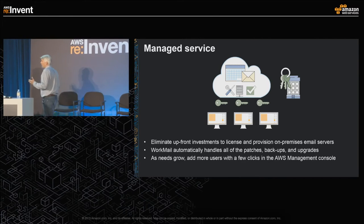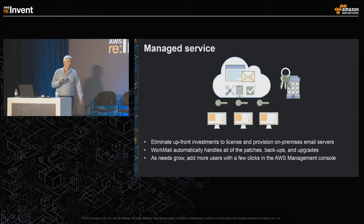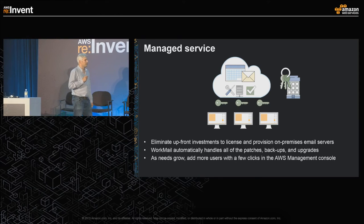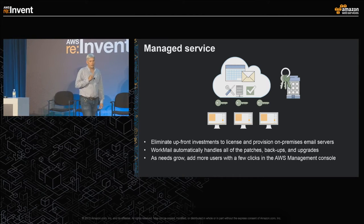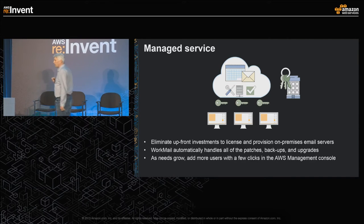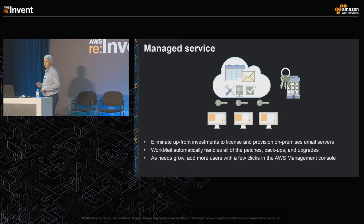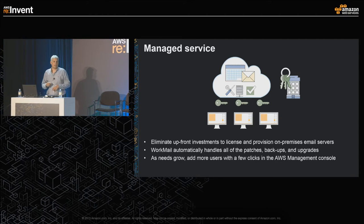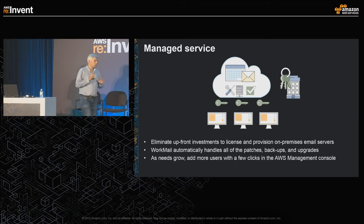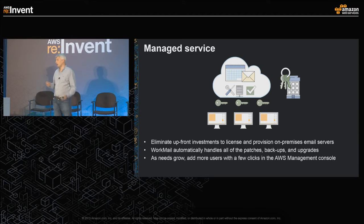Amazon WorkMail is an enterprise email and calendaring service that's completely hosted in the cloud. It's completely managed — you don't need to worry about patching software or provisioning hardware, and it doesn't even require you to manage EC2 instances. It's completely transparent: you go to the AWS console, sign up for WorkMail, and you're ready to go.